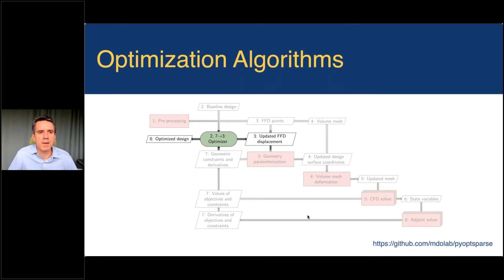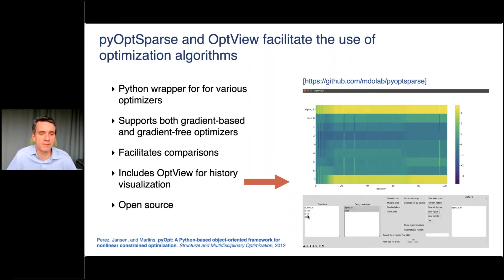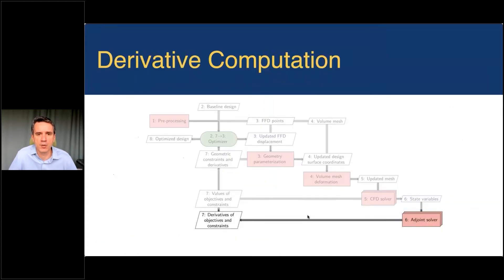For the optimizer, we use SNopt — a state-of-the-art gradient-based optimizer — and created our own Python wrapper, PyOptSparse, which is open source. This wrapper lets us easily switch between optimization packages including SNopt or gradient-free optimizers. PyOptSparse also provides OptView, a tool to check optimization history and debug your optimizations.